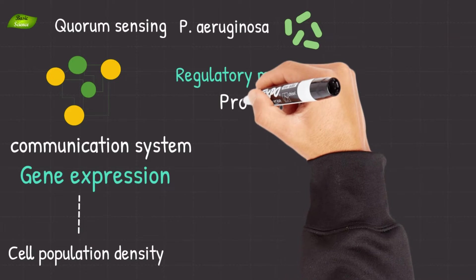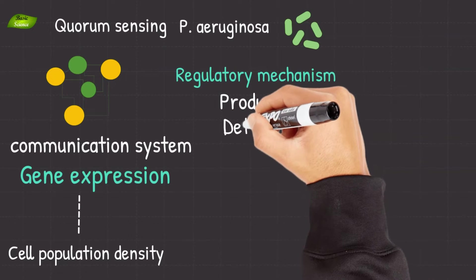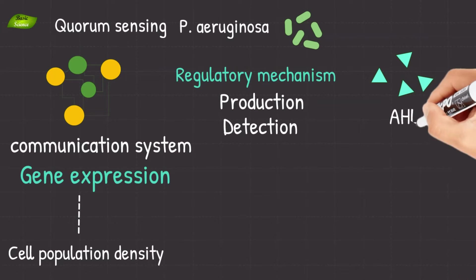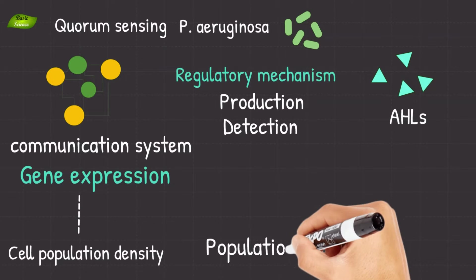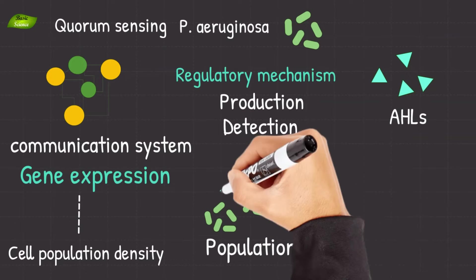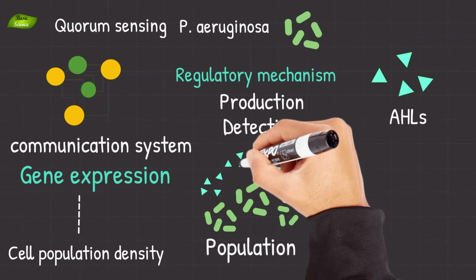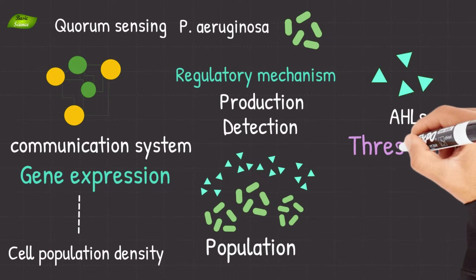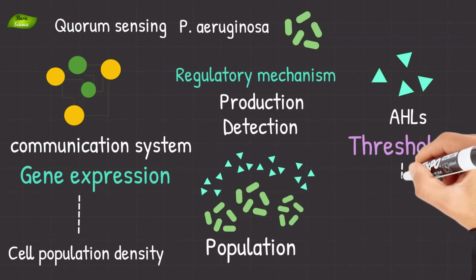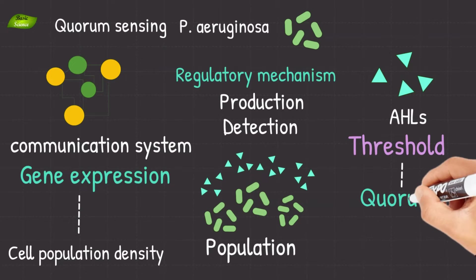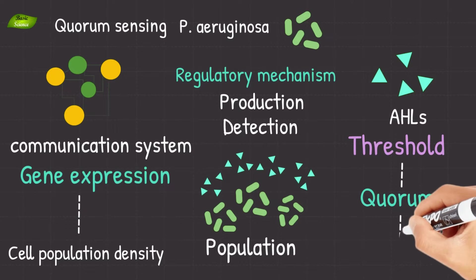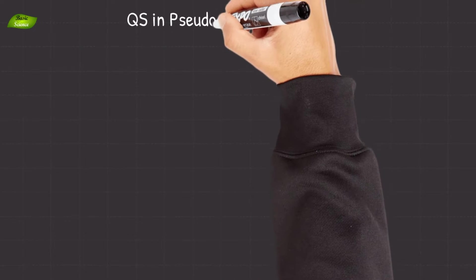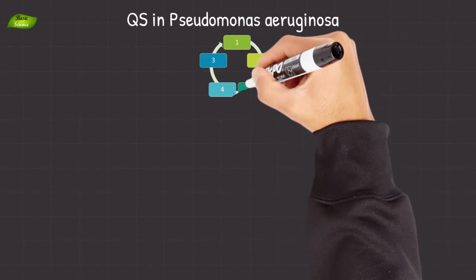This complex regulatory mechanism involves the production and detection of signaling molecules, primarily acyl homoserine lactones. As the bacterial population grows, these AHLs accumulate in the surrounding environment. Once a critical threshold concentration is reached, the bacteria can sense this quorum and initiate a synchronized response.